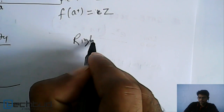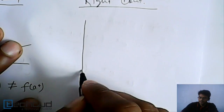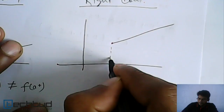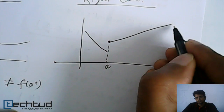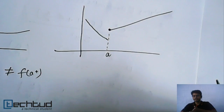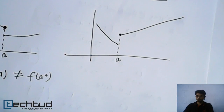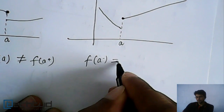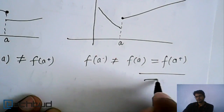Similarly, we have right continuity. The function has a proper value at 'a' and from 'a' it is continuous towards the right. When we say left continuous, it means from that point towards the left it is continuous. When we say right continuous, it means from that point towards the right it is continuous. Here, f(a⁻) is not equal to f(a), but f(a) is equal to f(a⁺).